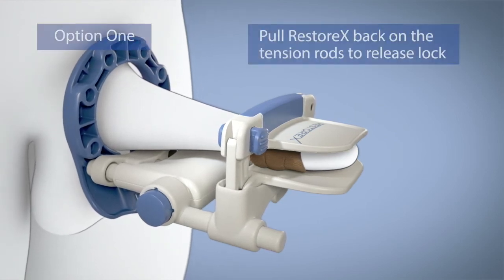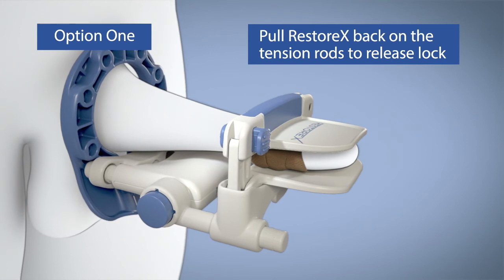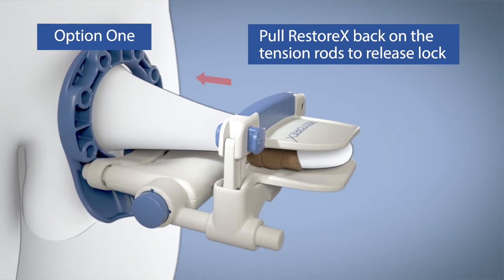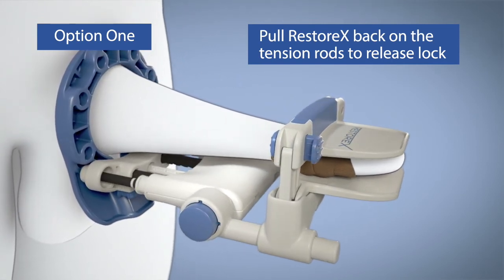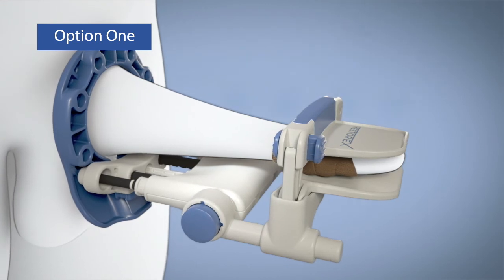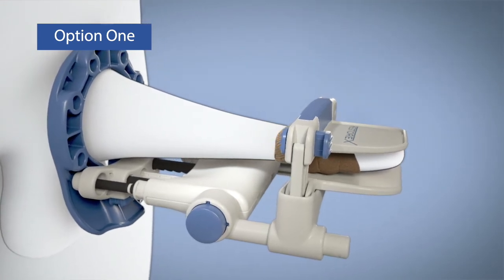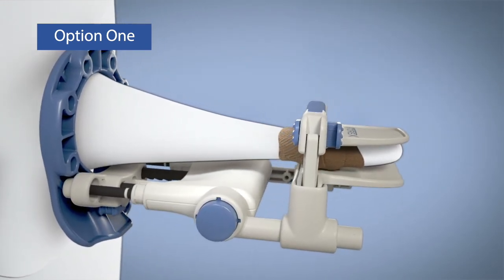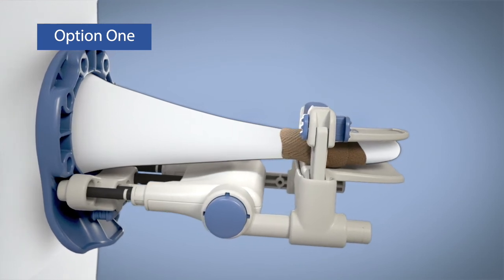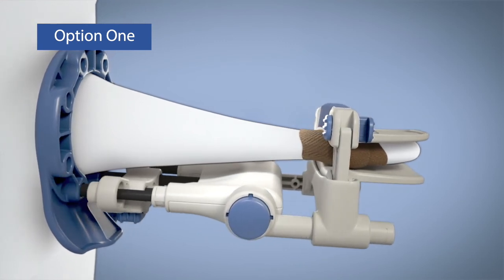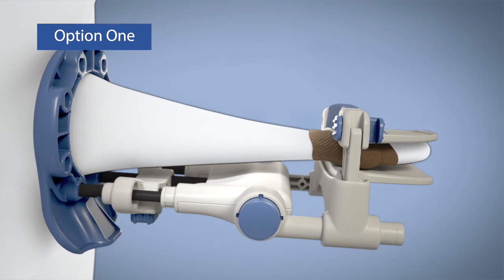Second, as shown, pull RestoreX back on the tension rods to release the lock and then slowly and gently release the springs. Next, while holding the pelvic ring against your body with one hand, lengthen RestoreX by pushing it along the extension rods one notch at a time until the white bands on each tension rod can no longer be seen.